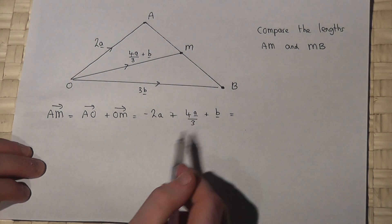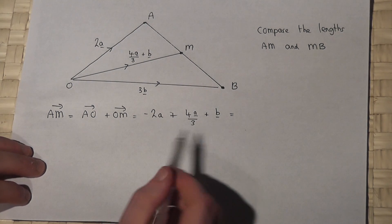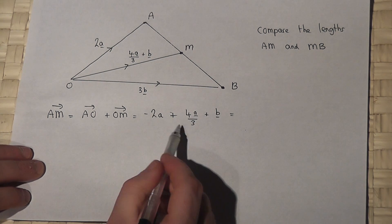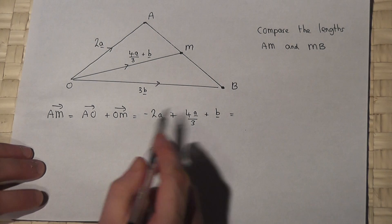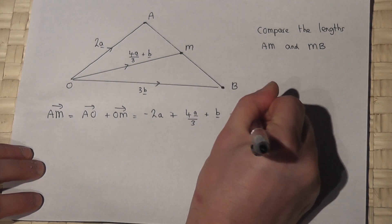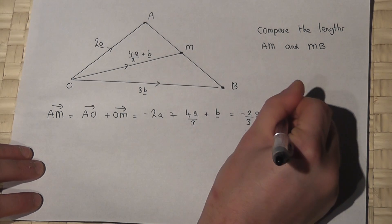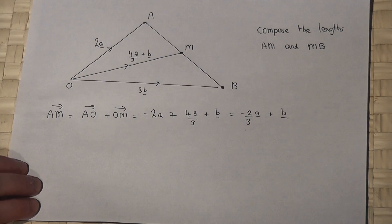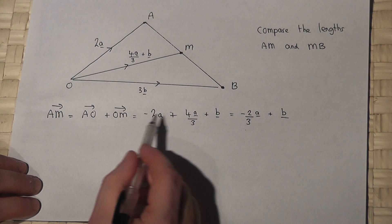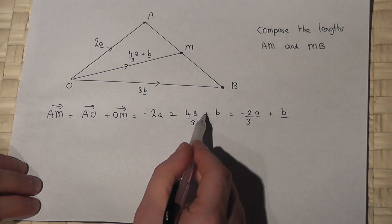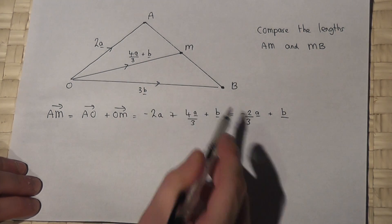Now this becomes just a quick bit of fraction work. So minus 2 plus 4 thirds, or indeed 4 thirds take away 2, is just minus 2 thirds. So it's minus 2 thirds of a plus b. Again, 4 thirds take away 2 is minus 2 thirds a plus the b. This has been simplified.